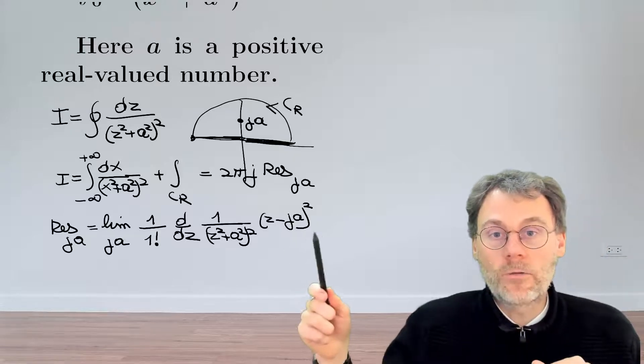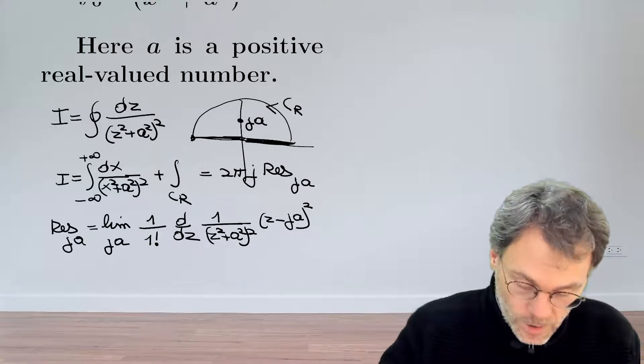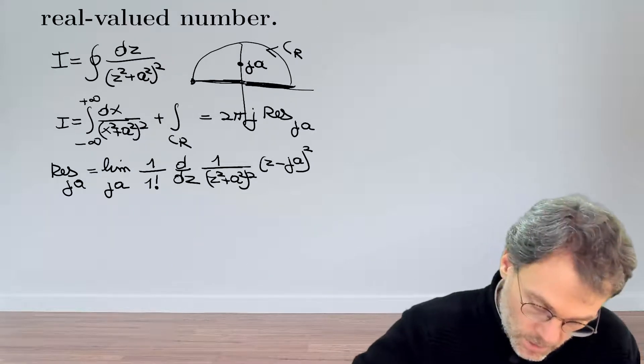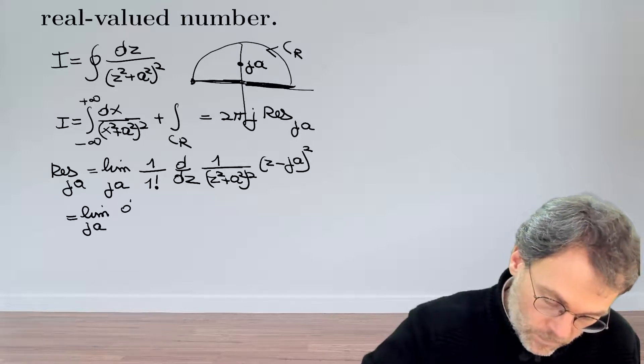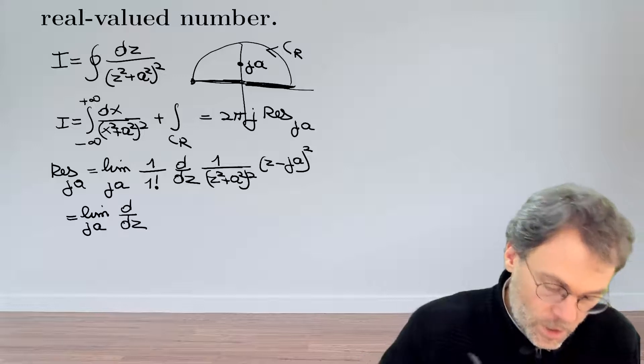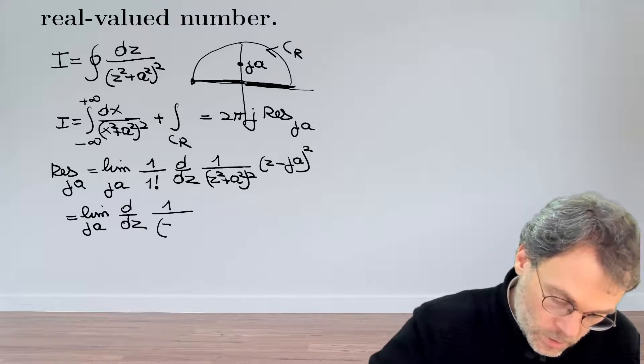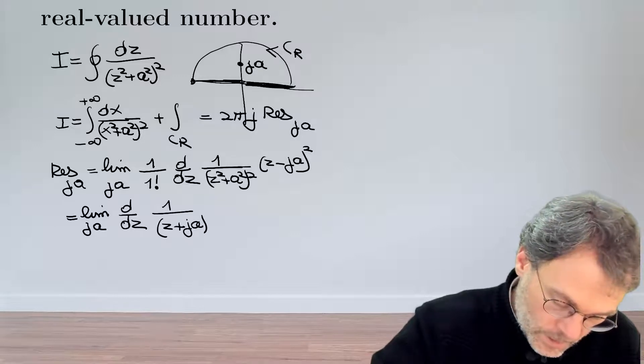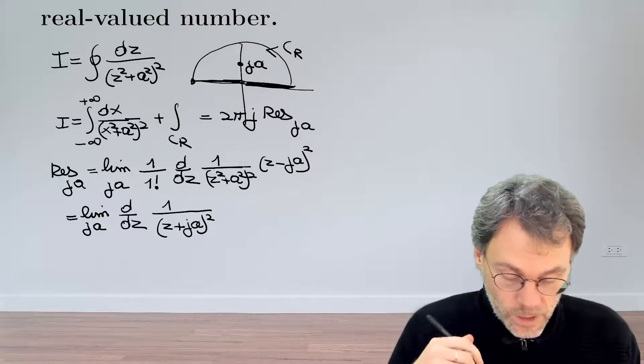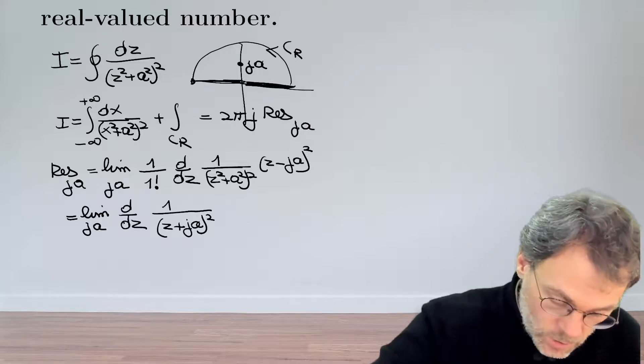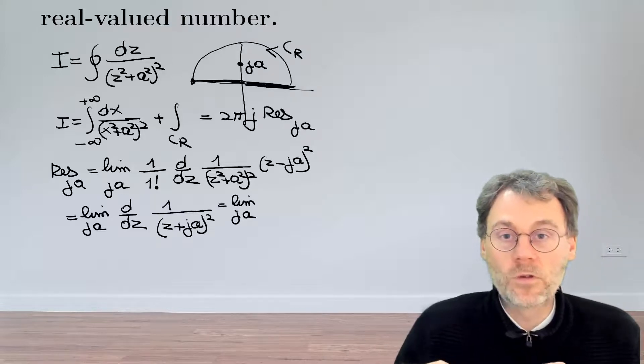So if we evaluate this bunch over here, then we can calculate the residue. So let's proceed, the limit at ja of the derivative. So the only thing that we're left with here are the terms related to the other singularity, so we need to calculate this thing over here. So this becomes the limit at ja of the derivative...